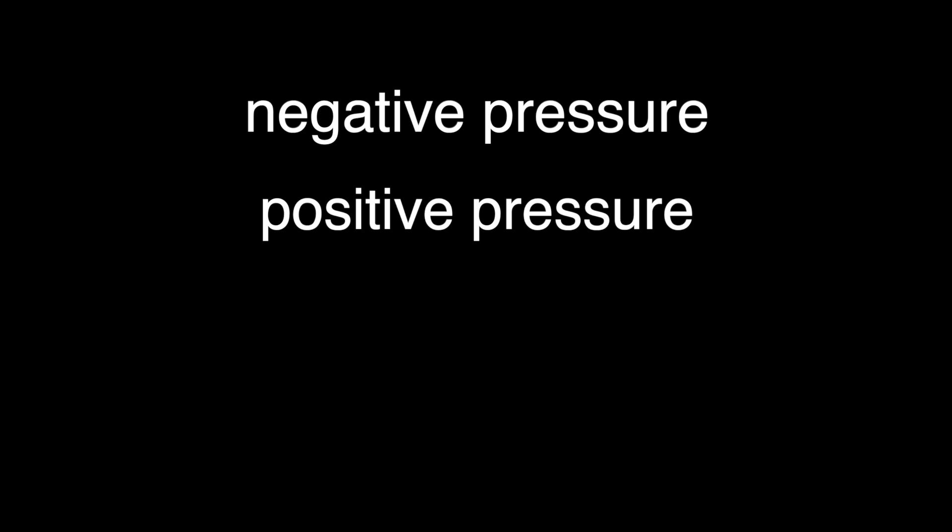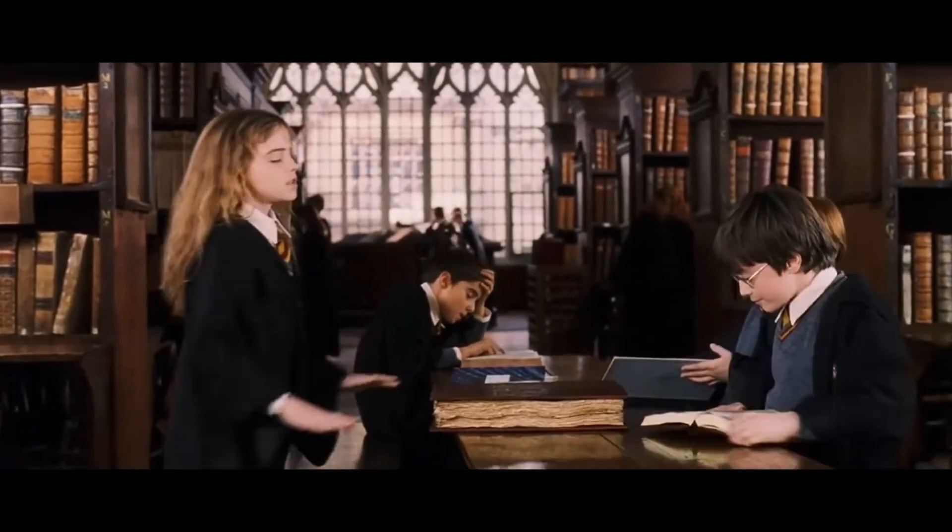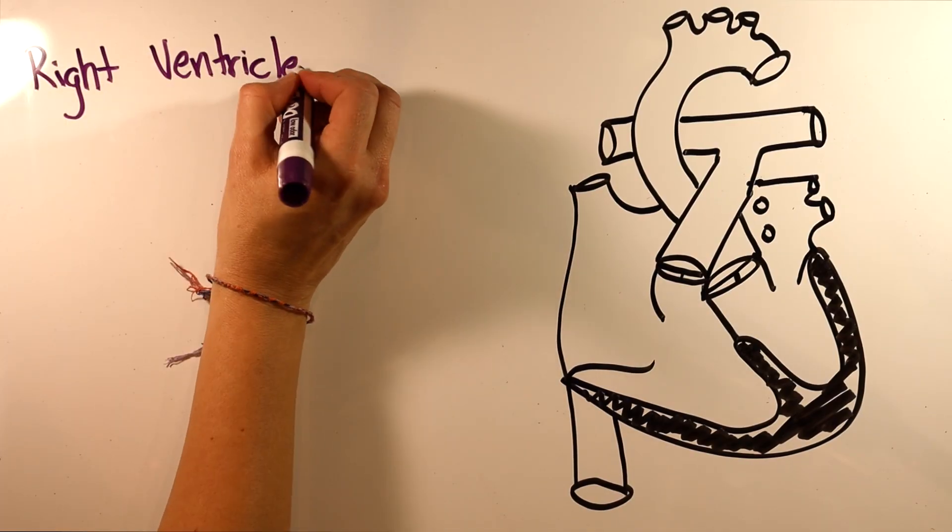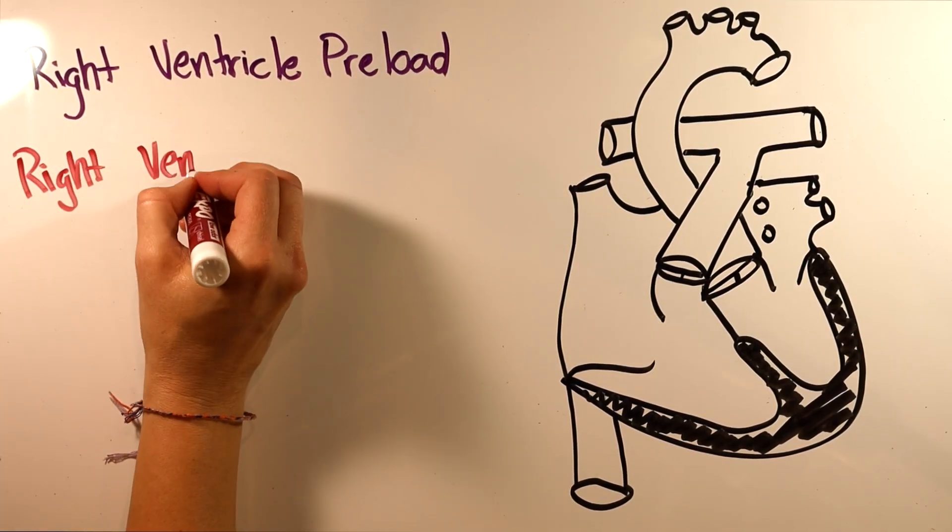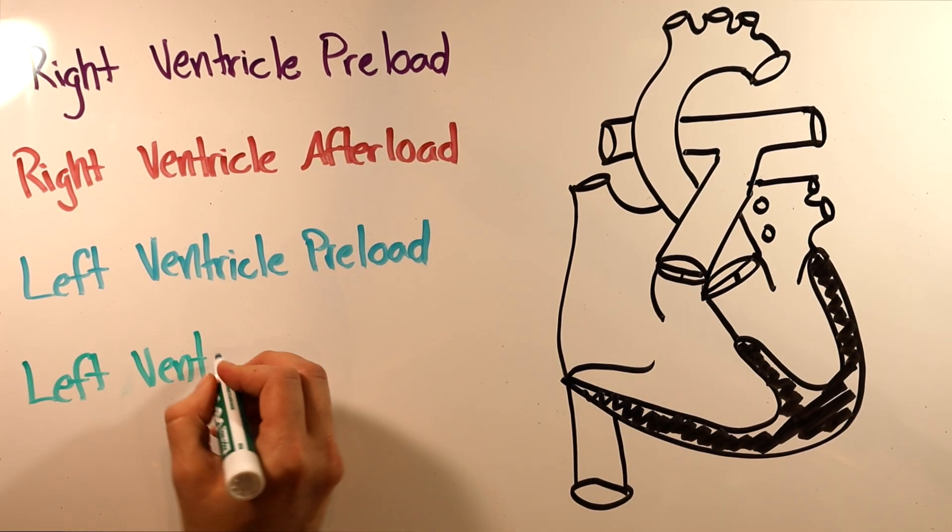If you are watching this video, I assume you know what I mean by negative pressure, positive pressure, preload, and afterload. If not, you may want to stop now and do some more studying. When I think about how the transition from negative to positive pressure ventilation affects the heart, I take it one ventricle at a time and think about preload and afterload.